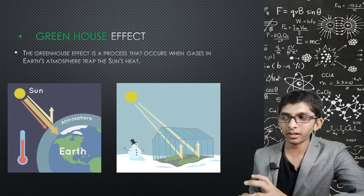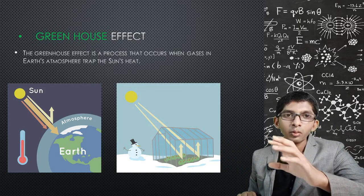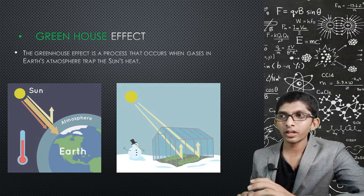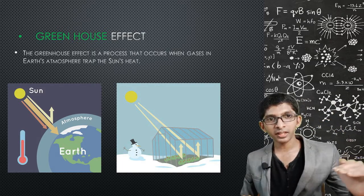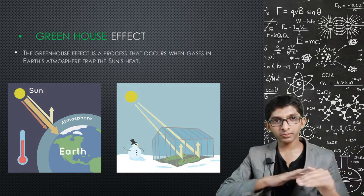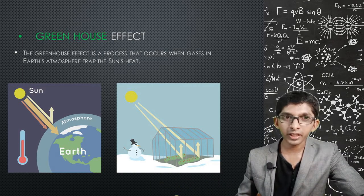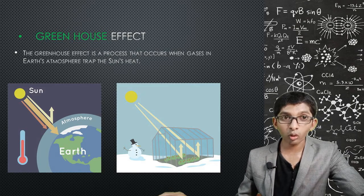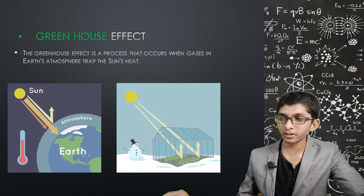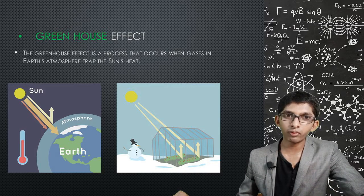The excess trapped heat causes icebergs to melt, leading to a rise in sea level. This rise in sea level can submerge coastal land. Animals and corals in affected areas cannot be protected, and the impact on biodiversity is harmful.